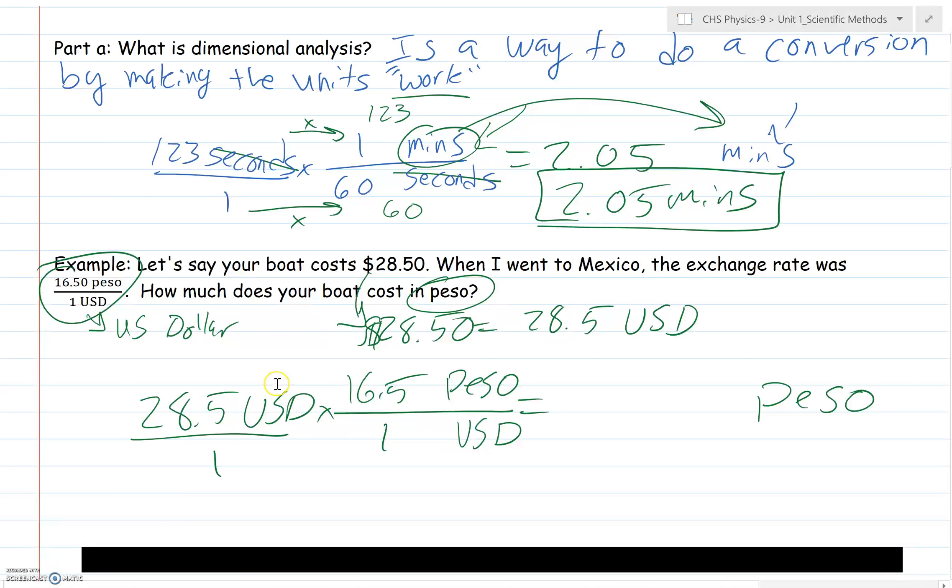Now I go back to my original rate, which was 16.5 peso for one USD. I match 16.5 peso to one USD. Now I can cross out my U.S. dollars because I've got that on the top and bottom. I multiply straight across, then divide in the end. So I do 28.5 times 16.5, which gives me 470.25. 1 times 1 is still 1. So 470.25 divided by 1 is 470.25. Since my USD crossed out, I'm left with peso. I end up with 470.25 peso as my final answer.